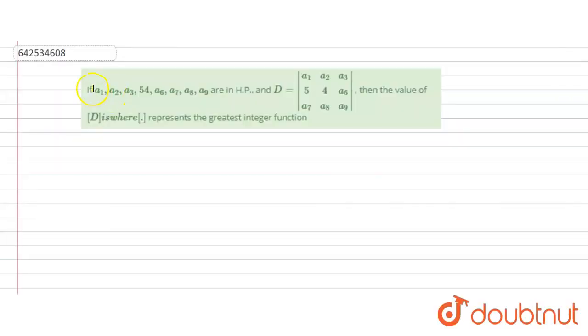So, students, in this question we have if A1, A2, A3, 5, 4, A6... this is not 54, this is 5 and 4, are in HP.